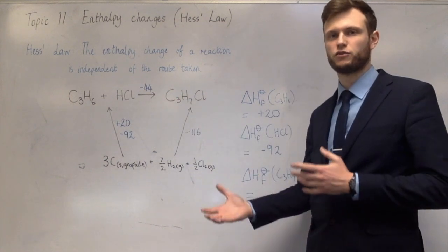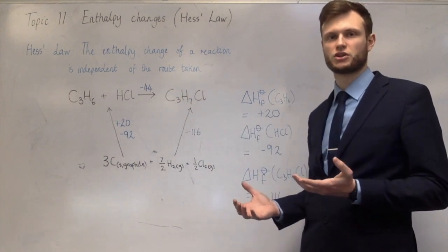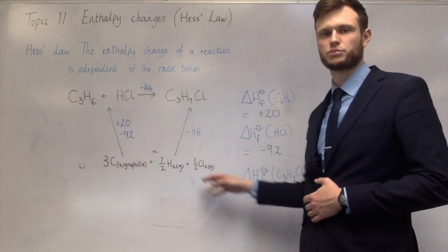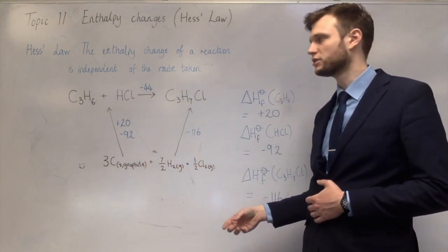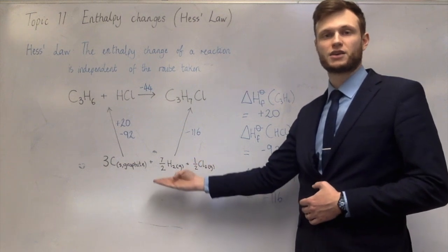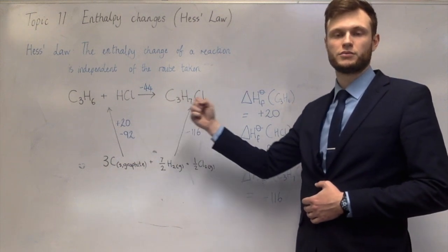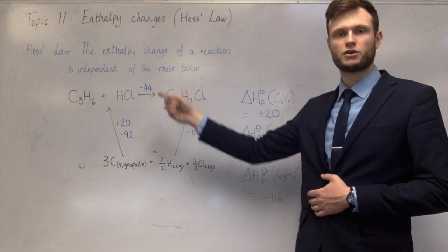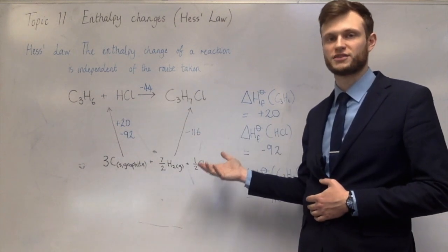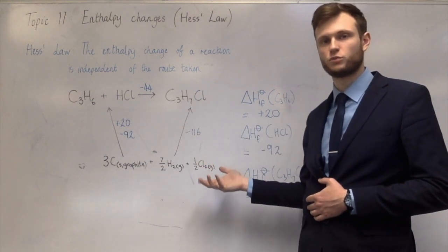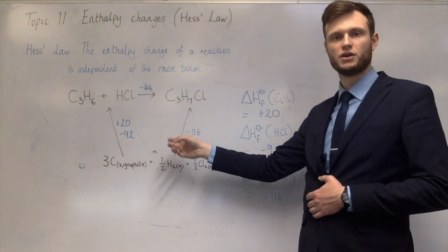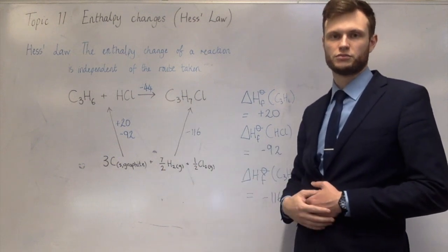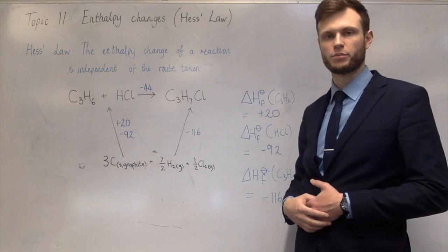You can see that the steps for formation and combustion are quite similar. With combustion, the arrows go down to the products of the combustion reaction; with formation, the arrows go up — because combustion creates products so arrows go in the same direction as burning, whereas formation makes the chemicals so arrows point upward.